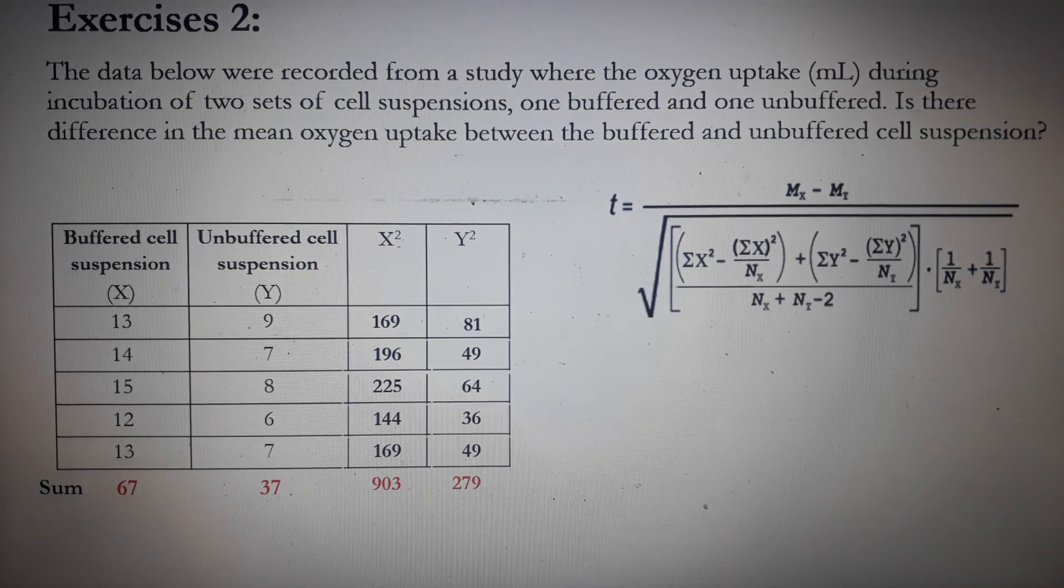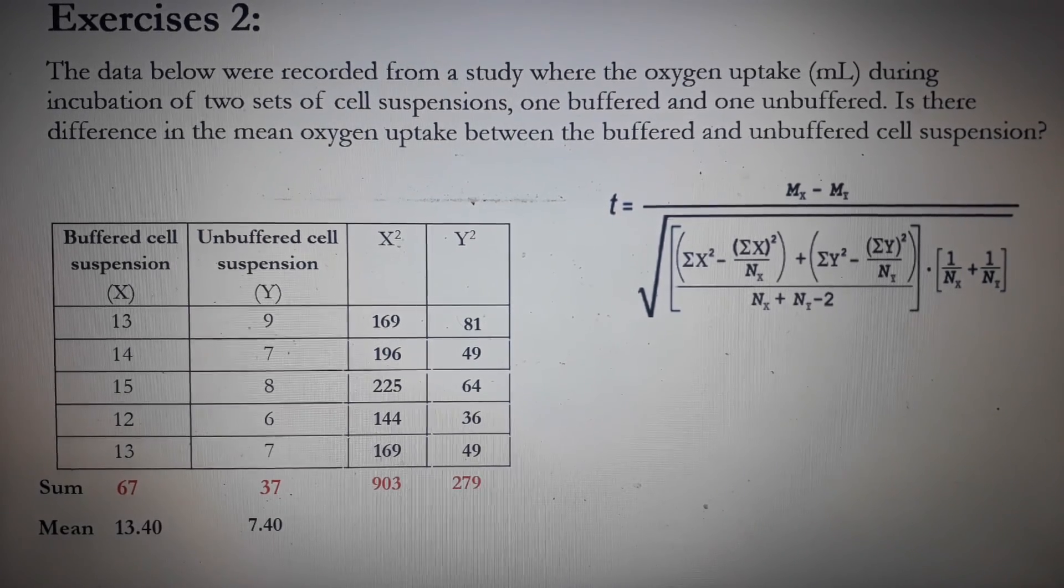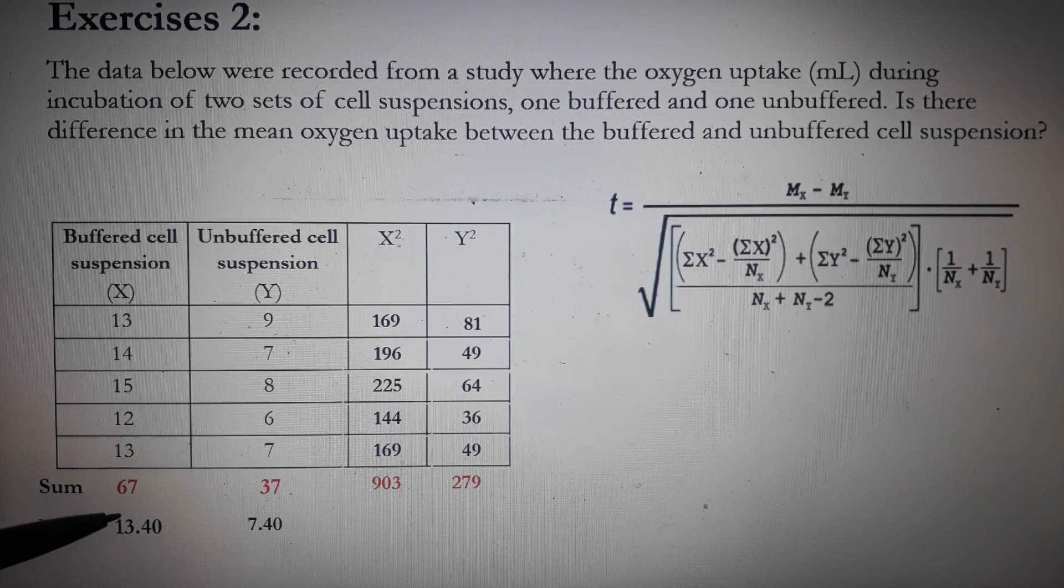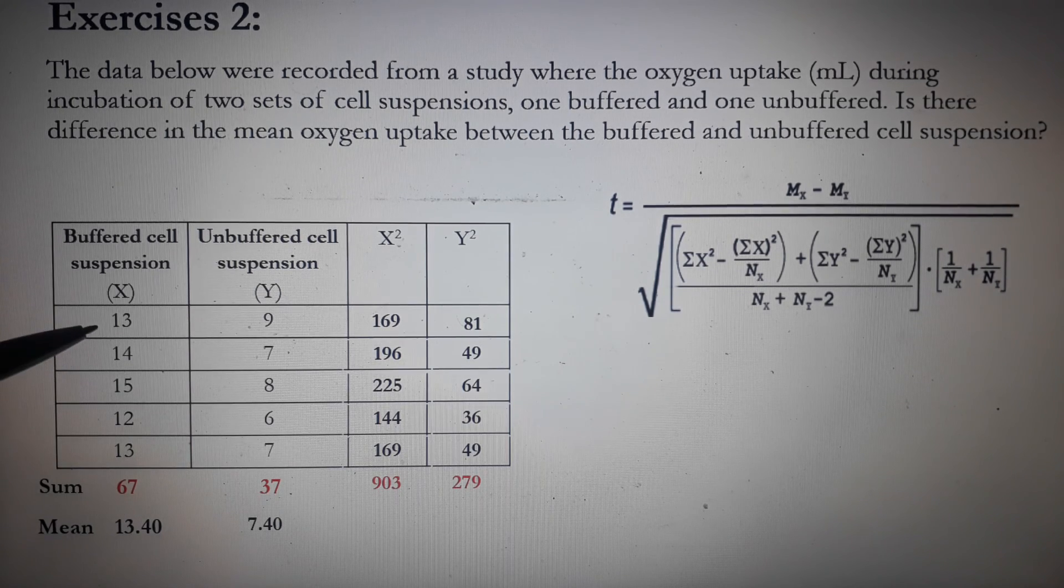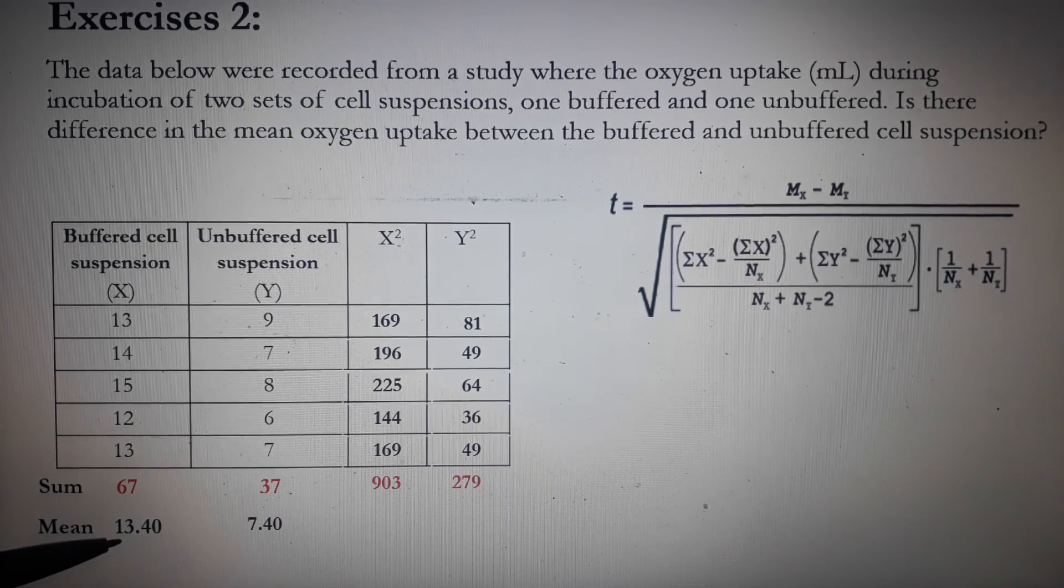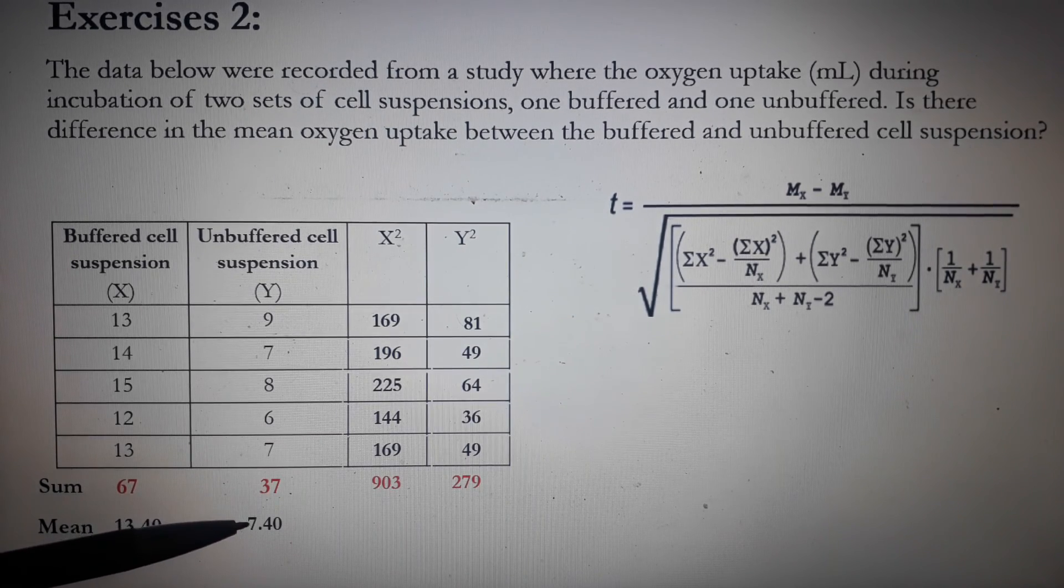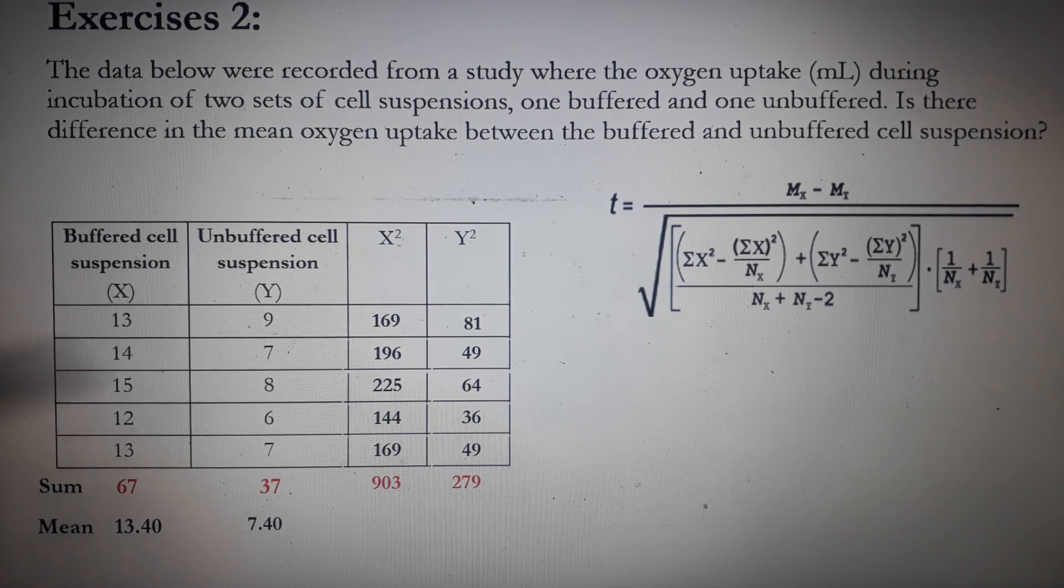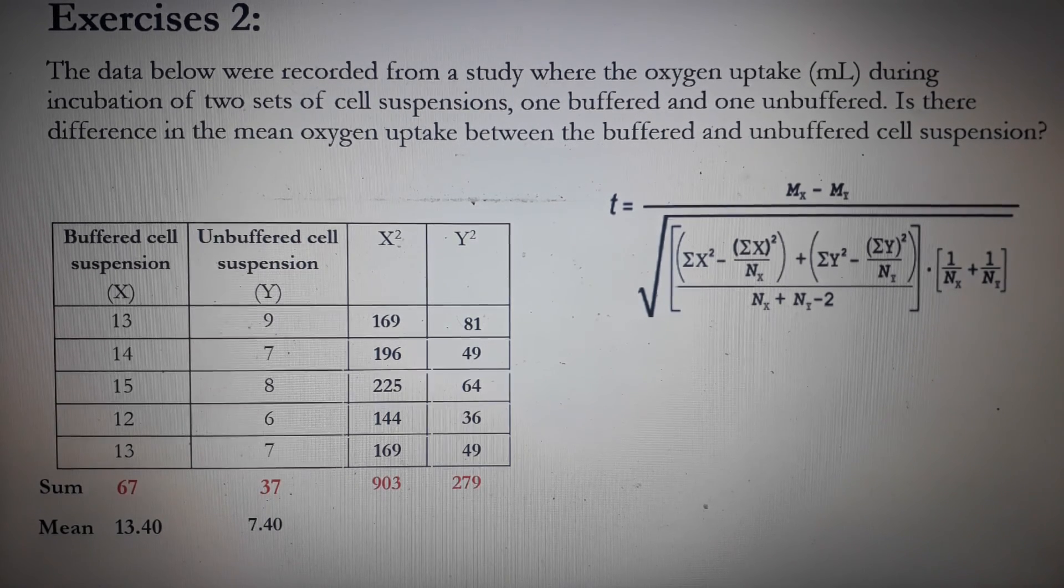Now get the mean of each of the two groups. So in other words, it's 67 divided by 1, 2, 3, 4, 5. So the answer is 13.40. For the y group, it's 37 divided by 5 as well. So the answer is 7.40.